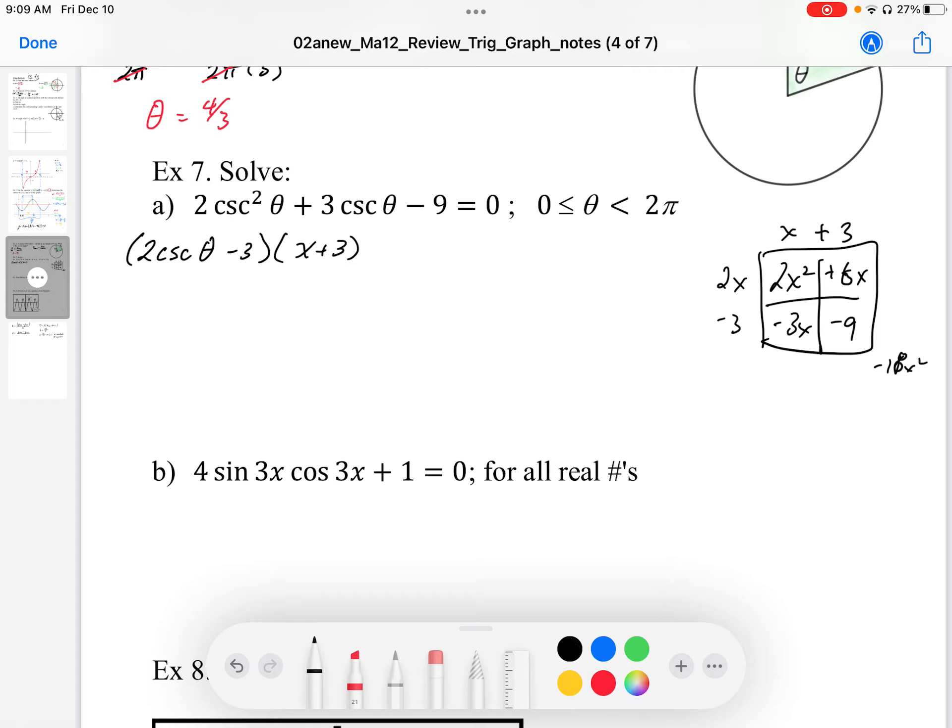When I factor this, this becomes 2 cosecant theta minus 3 times cosecant theta plus 3. That's equal to 0. In this case, we end up with cosecant theta equals 3 over 2 and cosecant theta equals negative 3.